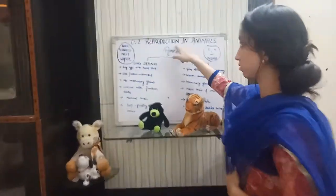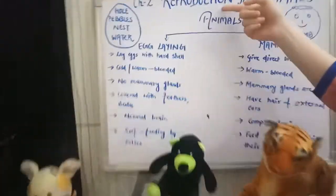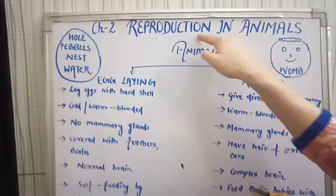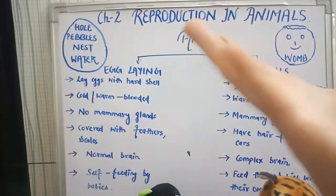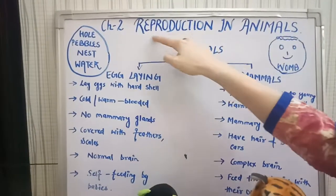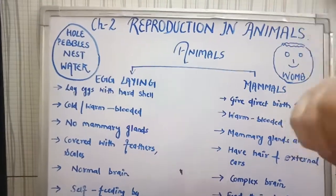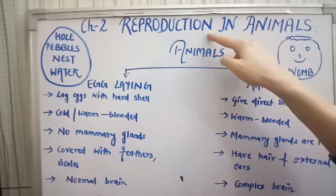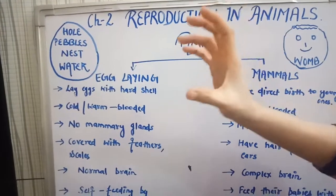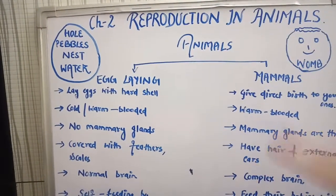Parents will reproduce a baby — a newborn baby of their own kind. Focus on the term reproduction. 'Re' means again and 'production' means we are producing, we are generating something. So if we are producing something again and again, that is called reproduction. Only living things can reproduce — remember this.